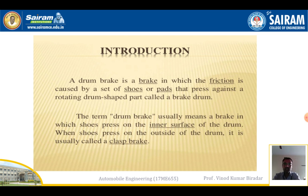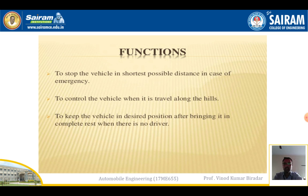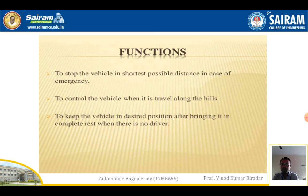The main function of drum brakes — like all brake types — is to stop the vehicle in the shortest possible distance in emergency cases. The second function is to control the vehicle when travelling along hills, whether uphill or downhill. The third function is to keep the vehicle in a desired position; even at very high speed you should have control capacity and be able to stop suddenly when required.